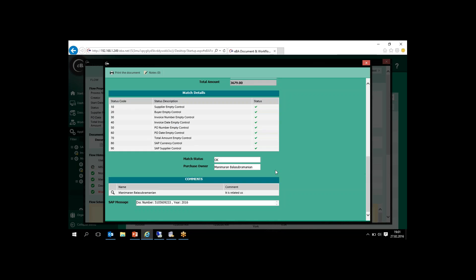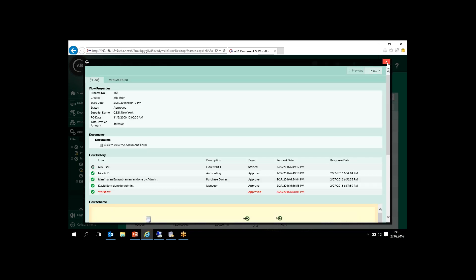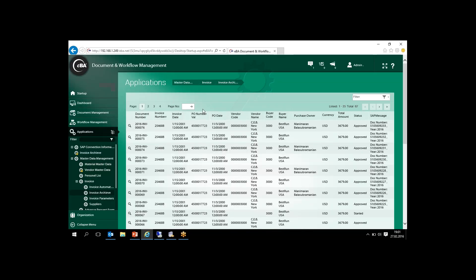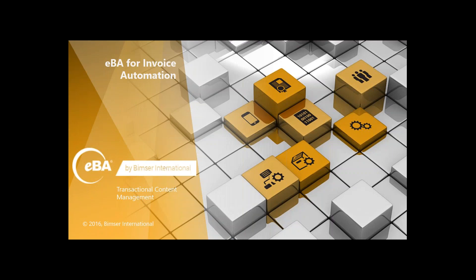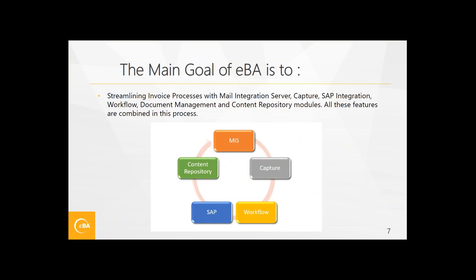We can review comments about this process and give authorization access to related users in the organization. The main goal of EBA is to streamline invoice processes with the Mail Integration Server, capture, SAP integration, workflow and document management, and content repository modules. All these features are combined in this process and provide efficiency and cost reduction.